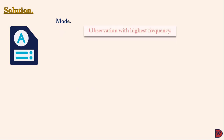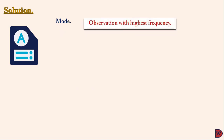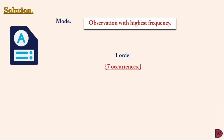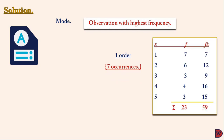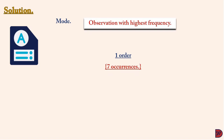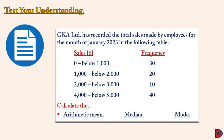The mode is the observation with the highest frequency. That is one order, because hours that had one order each was seven — the highest frequency in the table.